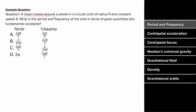Let's say a moon travels around a planet in a circular orbit of radius r at a constant speed s, and we want to know what the period and frequency are in terms of given quantities and fundamental constants. We'll use the relationship between the speed, the period, and the frequency. We know that for objects in circular motion, the speed is two pi r over the period.